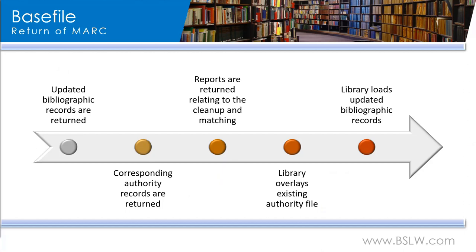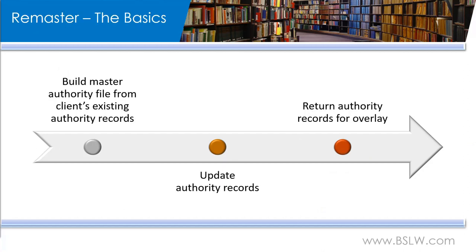Our remaster service takes a different approach than our base file to building your auth master, and it is available when it makes the most sense for the library's needs. When we talk about a remaster, we are talking about building the auth master based on your existing authority records, whereas the base file was using your bibliographic records. So we'll take your authority file, update your authority records to the most current version of each, and return the records for reloading into your system.